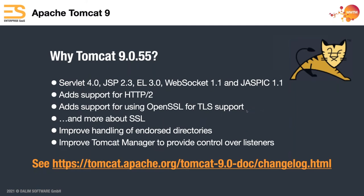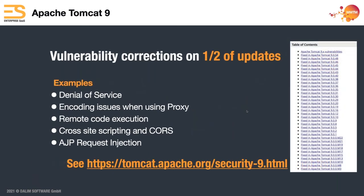Tomcat 9 addresses vulnerabilities that customers have been asking about for a couple of years — Dalim was behind on Tomcat. Security is the big thing: denial of service attacks, encoding issues, remote execution codes, cross-site scripting, and CORS — all fixed with the newer version of Tomcat.